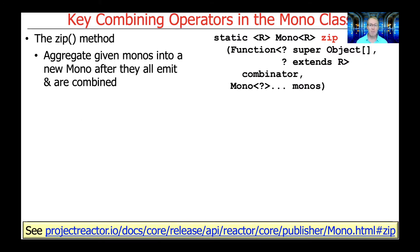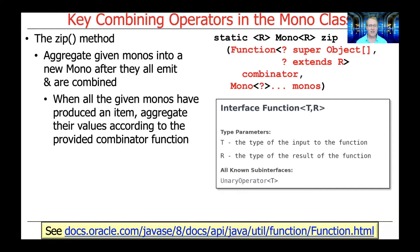Let's now move on and talk about the Zip method. This is a bit of a generalization of ZipWith — what it does is it aggregates a bunch of given Monos into a single new Mono after they all emit and are all combined. You can think of Zip as basically taking ZipWith and pumping it full of steroids to give it more interesting behavior. The parameters passed to Zip are a combinator function and a var-args list or array of Monos, so this can be a variable size number — you could have one, you could have a dozen or whatever.